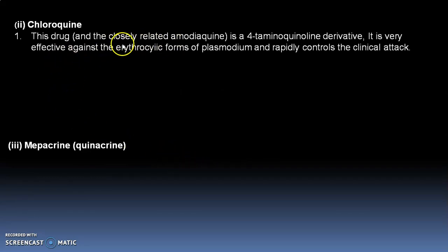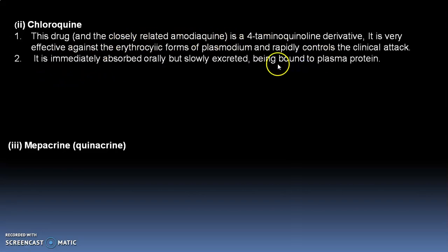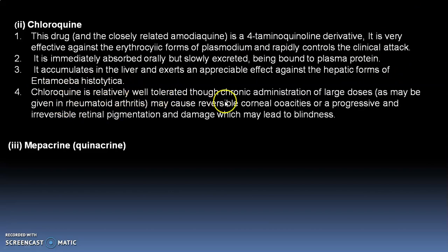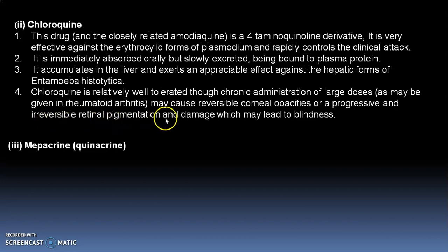Chloroquine is closely related to amodiaquine. It is a 4-aminoquinoline derivative, very effective against the erythrocytic form of Plasmodium, and rapidly controls the clinical attack. It is immediately absorbed orally but slowly excreted. Being bound to plasma proteins, it accumulates in the liver and exerts an appreciable effect against the hepatic form of Entamoeba histolytica. Chloroquine is relatively well tolerated, though chronic administration of large doses — as may be given in rheumatoid arthritis — may cause reversible corneal opacities or progressive and irreversible retinal pigmentation, which may lead to blindness.